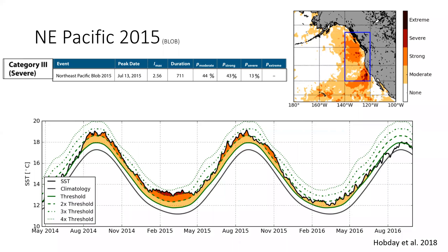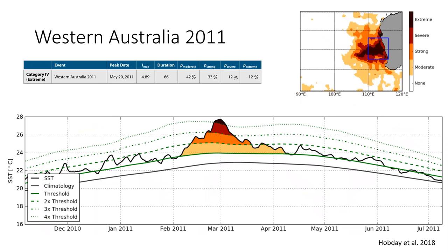The Northeast Pacific event lasted 711 days, cycling through two summers and a winter. The heatwave effect was characterized as severe during the winter period, meaning animals expecting cooler winter temperatures were not receiving them — it was in severe state 13% of the time. The Western Australian event was simpler, lasting 66 days, and reached the extreme category for 12% of those days. We would expect most direct biological effects, such as mortality, to have occurred around March 2011 when the heatwave peaked.